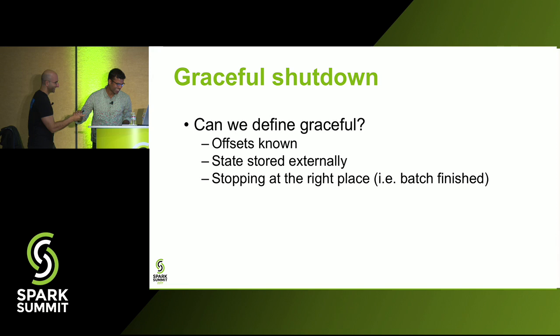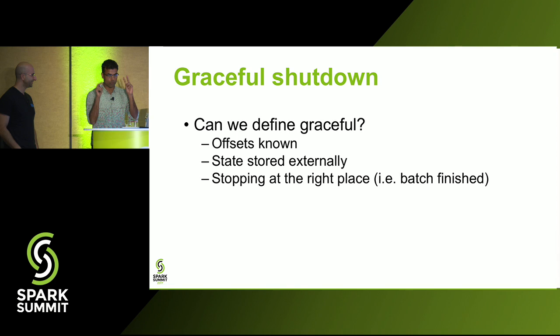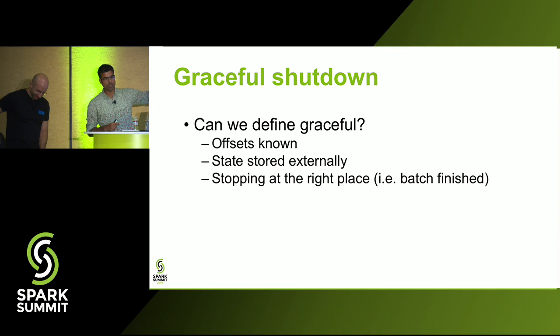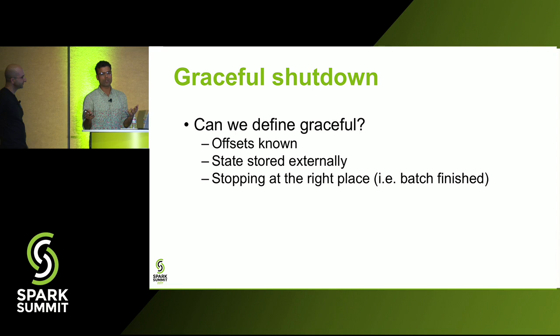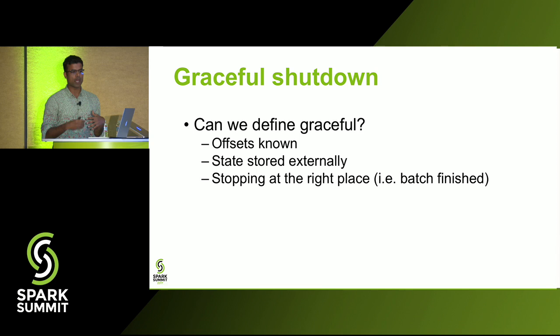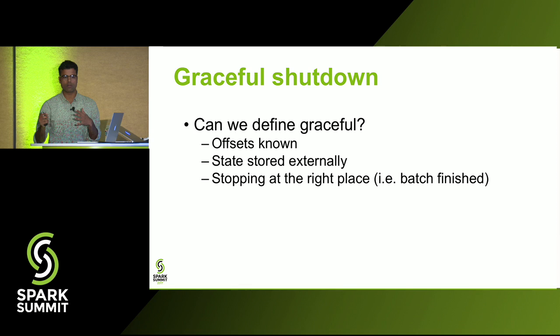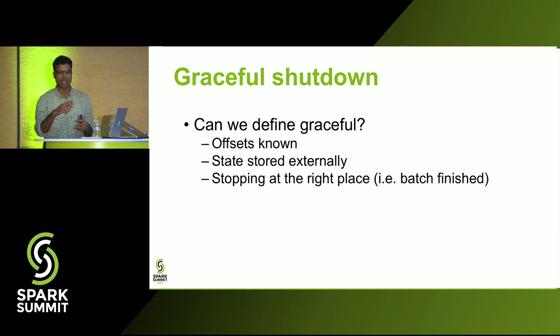Next mistake: not shutting down gracefully. We need to define what we mean by 'graceful.' Three things: offsets should be known — how much data you've processed so far; you should stop at the right place, not in the middle of a batch, persisting offsets; and your state should be stored externally so you can pick up from where you left off.